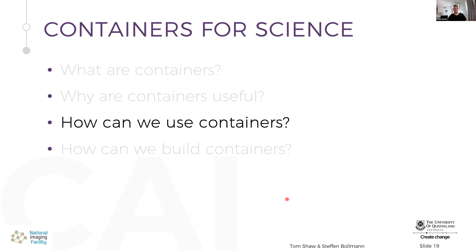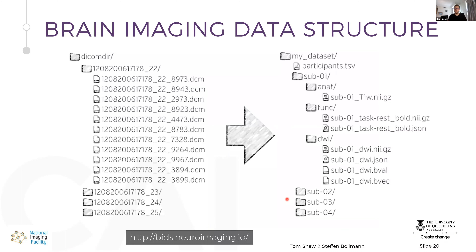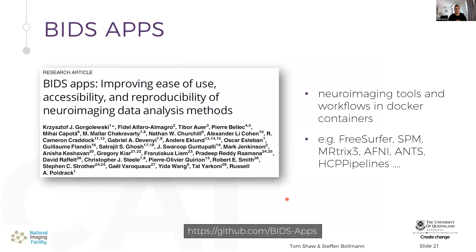We're going to be using the BIDS data structure — Brain Imaging Data Structure — which you should be familiar with from the train track sessions. BIDS apps are neuroimaging tools and workflows in Docker containers, for example FreeSurfer, SPM, et cetera. All of these different tools run on the BIDS data format, so if your data is in BIDS, you can easily run all of these tools and analysis pipelines very quickly.